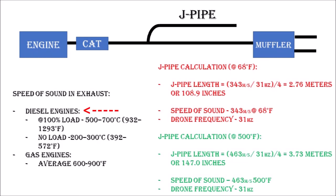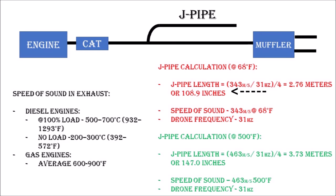Frank, who asked the question, has a diesel engine and he knew the temperature range was pretty broad — anywhere from 572 degrees Fahrenheit at no-load conditions up to as high as 1,293 degrees Fahrenheit. With gas engines it's not quite as large a range, but it's anywhere from 600 to 900 degrees Fahrenheit. So at 68°F you'd get a 108.9-inch J pipe, but at 500°F — where the speed of sound is 463 meters per second — you end up with a J pipe that is almost 40 inches longer.